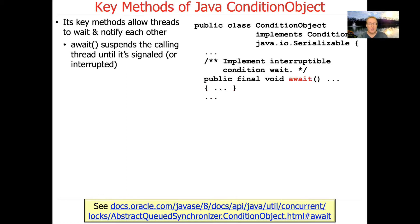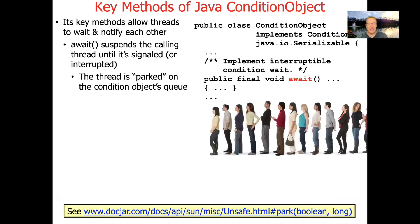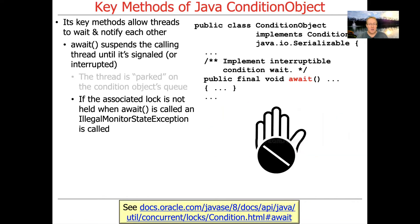The await method will suspend the calling thread until it's signaled by some other thread that calls signal or signalAll, or it can also be interrupted. When await is called, the underlying implementation will park the calling thread on the condition object's queue, which is used to implement its wait set — the set of waiting threads. If the associated lock is not held when await is called, you'll get an IllegalMonitorStateException, which is a bad thing.